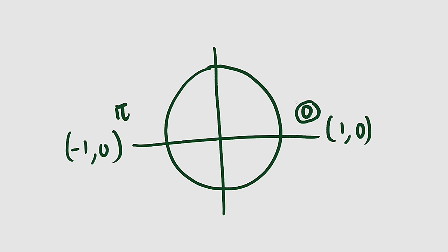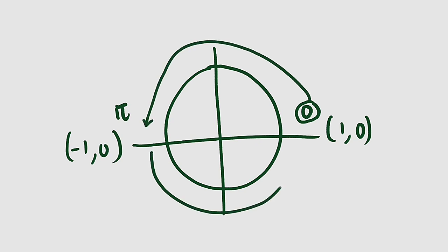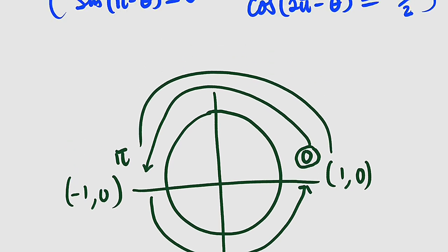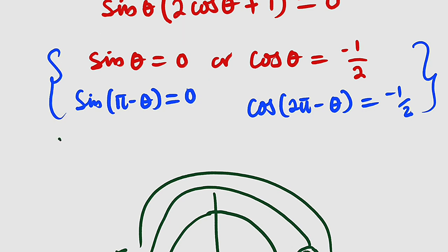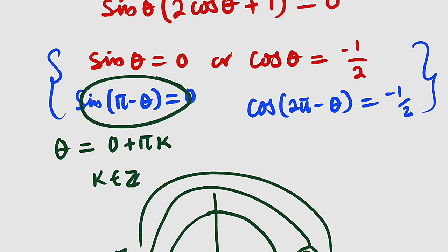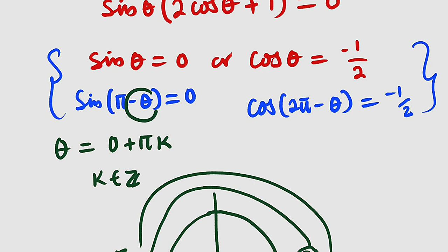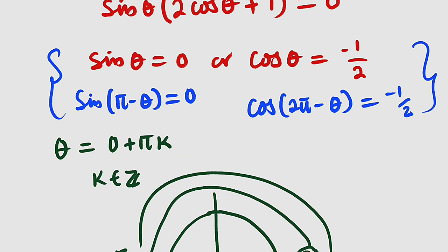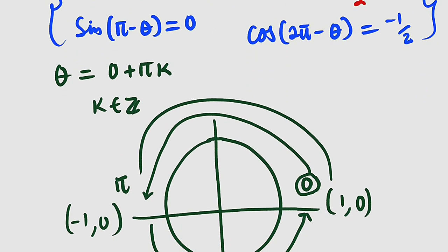We take this angle as reference — adding π takes you to the other point, and adding another π brings you back. So the solution to sine θ = 0 is θ = 0 + πk, where k is an integer. You can also solve them separately: you get 0 and π, and since adding π from 0 gives π and vice versa, you can simply write θ = πk. We are done with the first solution.